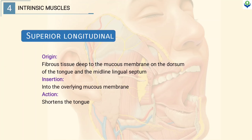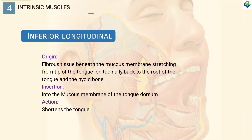The superior longitudinal muscle originates from the fibrous tissue deep to the mucous membrane on the dorsum of the tongue and the midline lingual septum. It gets inserted into the overlying mucous membrane. It acts by shortening the tongue. The inferior longitudinal muscle originates from the fibrous tissue beneath the mucous membrane stretching from the tip of the tongue longitudinally back to the root of the tongue and the hyoid bone. It gets inserted into the mucous membrane of the tongue dorsum. It shortens the tongue.